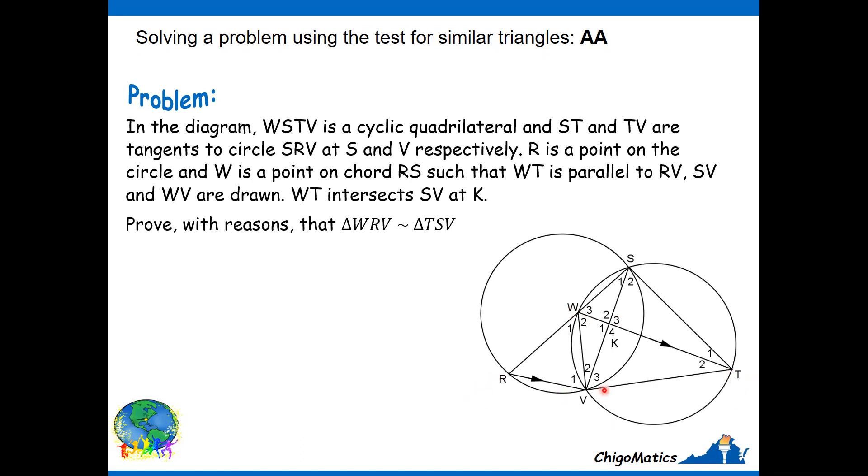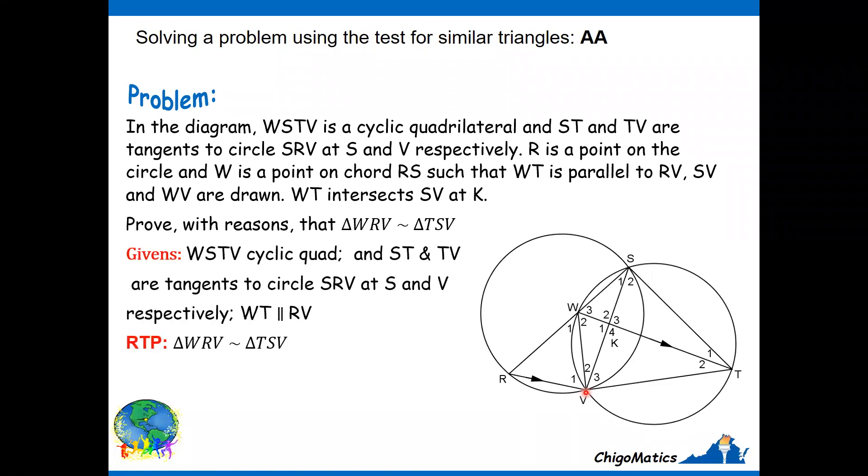WT is parallel to RV. What we are asking to prove is triangle WRV is similar to triangle TSV. It's always important to isolate the given information: we have the cyclic quadrilateral, the two tangents, and WT parallel to RV. This is what we are supposed to prove.